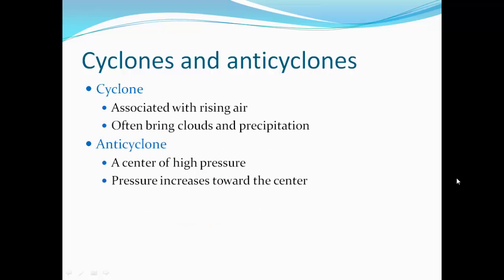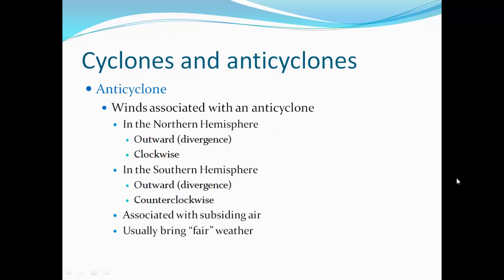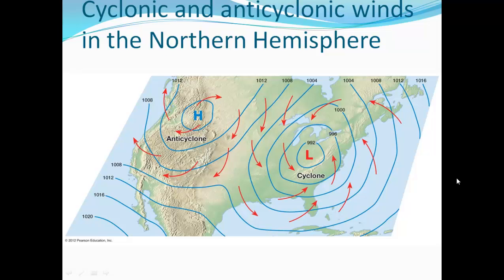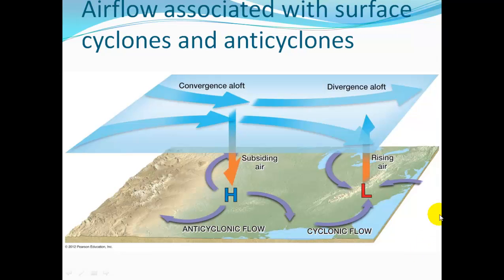A cyclone is associated with rising air and often brings clouds and precipitation. An anticyclone has a high-pressure center with pressure increasing towards the center. The air moves outwards, diverges, and travels clockwise in the northern hemisphere, counterclockwise in the southern hemisphere. This is associated with sinking, subsiding air, so high-pressure systems usually bring fair, nice weather.